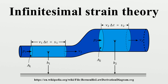The infinitesimal strain tensor, similarly to the Cauchy stress tensor, can be expressed as the sum of two other tensors: a mean strain tensor, or volumetric strain tensor, or spherical strain tensor, related to dilation or volume change; and a deviatoric component called the strain deviator tensor, related to distortion. The deviatoric strain tensor can be obtained by subtracting the mean strain tensor from the infinitesimal strain tensor.